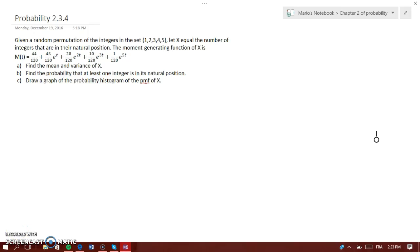Okay, so it says that given a random permutation of the integers in the set 1 through 5, let X equal the number of integers that are in the natural position. They give you this MGF and ask to find the mean and variance of X.